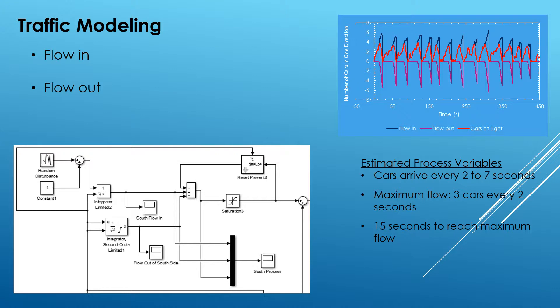As far as flow out, when the light turns green, cars will start from a stop and then the flow through the intersection will slowly increase until it reaches a maximum value. We estimated that maximum value to be about three cars every two seconds, and that it would take about 15 seconds to reach this maximum flow. So we based our model around this.